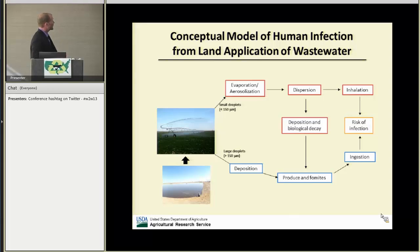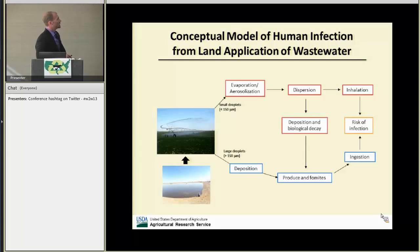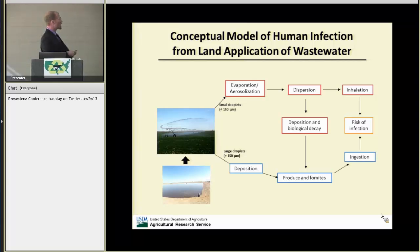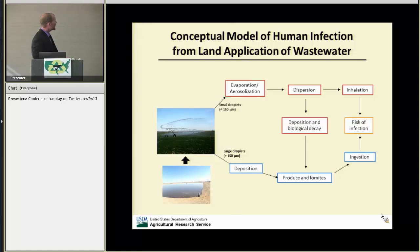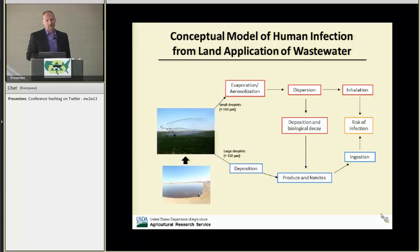Here is a conceptual model of human infection from land application of wastewater. Wastewater is pumped through a pivot, forming small droplets — aerosols — which become dispersed, and someone downwind may inhale them, creating a potential risk of infection. Conversely, some particles will deposit on produce or fomites and be ingested. Large droplets greater than 150 micrometers drop out quickly. We've been working our way through this whole process as part of a quantitative microbial risk assessment.